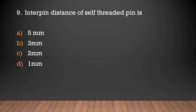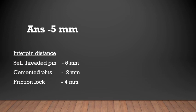Interpin distance of self-threading pins is: 5 mm, 3 mm, 2 mm, or 1 mm? The answer is 5 mm. Interpin distance in self-threading pins is 5 mm, in cemented pins it is 2 mm, and in friction-locked pins it is 4 mm.